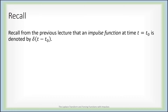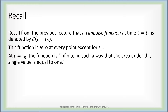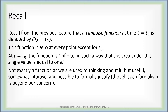Let's remember what an impulse function is. An impulse function at time t0, denoted by delta of t minus t0, is zero everywhere else, and at time t0 it has such an infinitely large value that the area under that single value is equal to one. It's not exactly a function in the sense that we're used to thinking, but it does have some very useful applications. It's also possible to formally justify it, although we didn't really go into the formal justification.